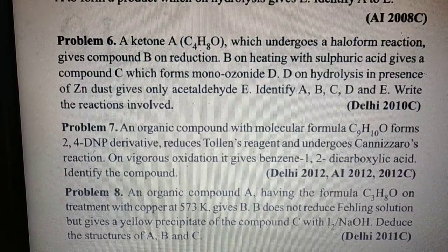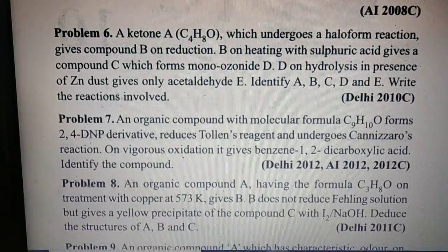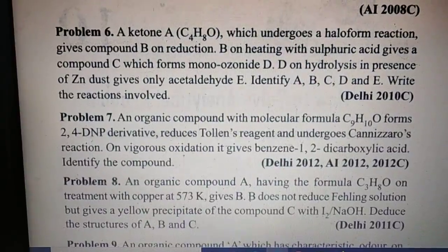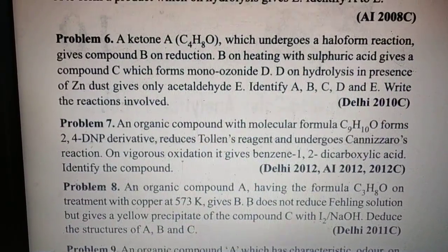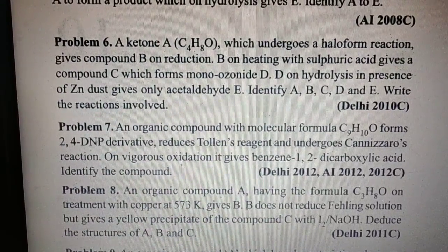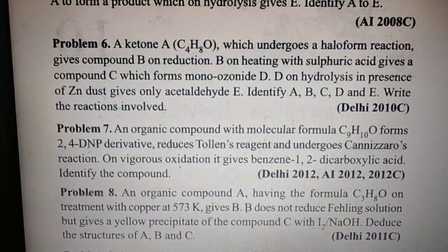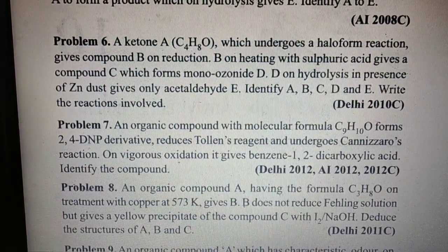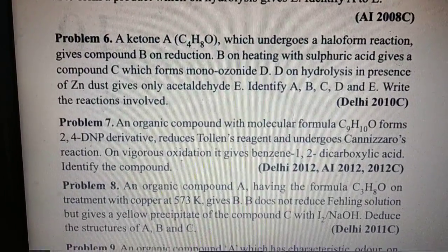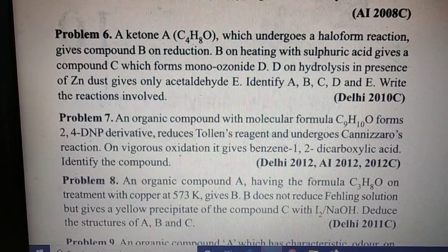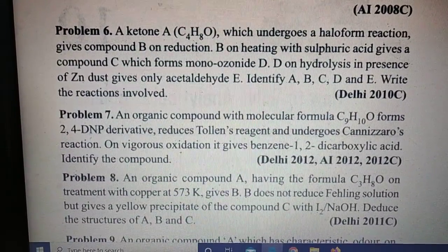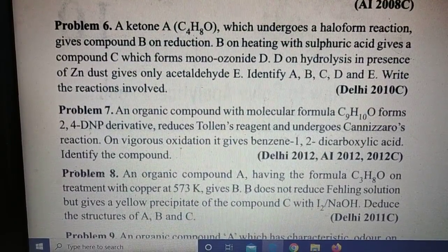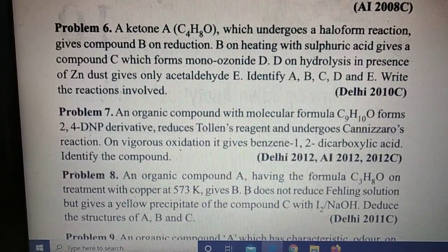On vigorous oxidation it gives benzene-1,2-dicarboxylic acid. So the species, the side chain will be at ortho position. Sir, how do we know? Because on oxidation you get 1,2-dicarboxylic acid. Means at position 1 there's aldehyde which on oxidation converts to COOH. But at position 2 also the species on oxidation converts to COOH. So two things are clear: ortho has second side chain, and on oxidation it also converts to C double bond O. Read the statement, try to solve yourself, then we'll get the answer.